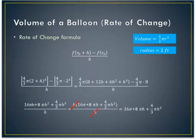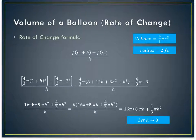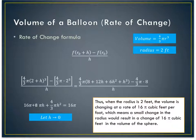If I plug in these are 0, let h go to 0, then I get my answer, because if I let h go to 0, all of that goes away, and I end up with 16 pi, which says when the radius is 2 feet, the volume is changing at a rate of 16 pi cubic feet per foot, which means a small change in the radius would result in a change of 16 pi cubic feet in the